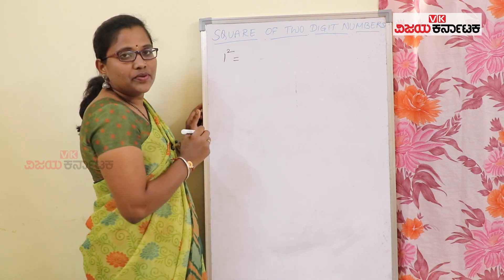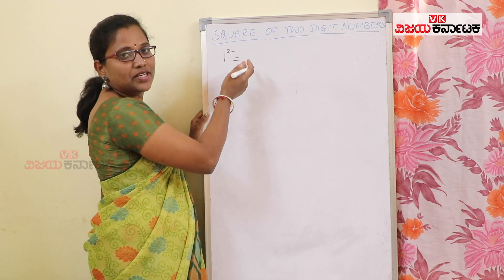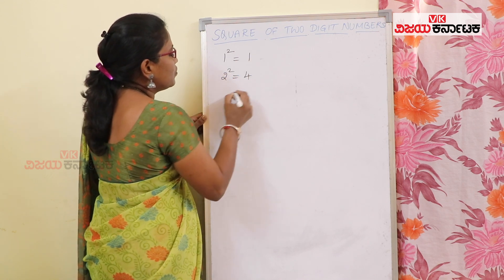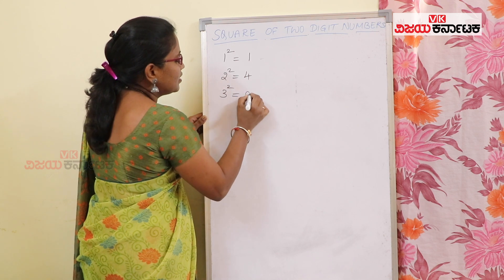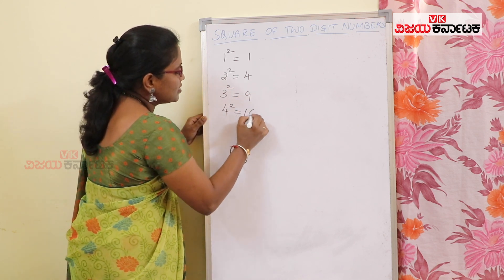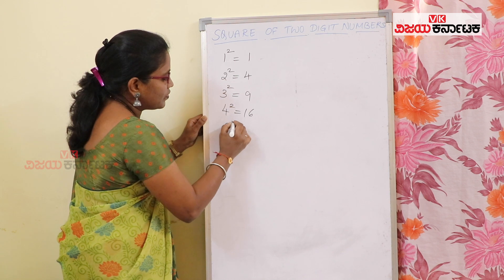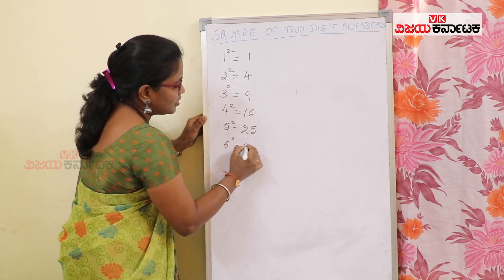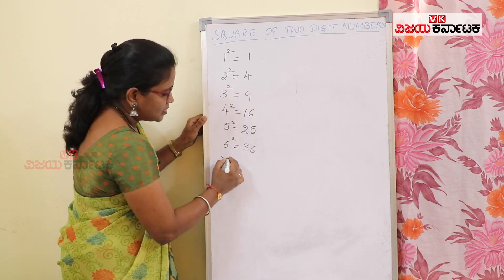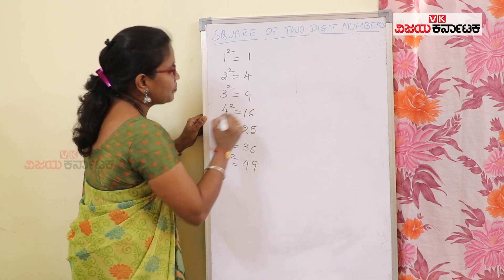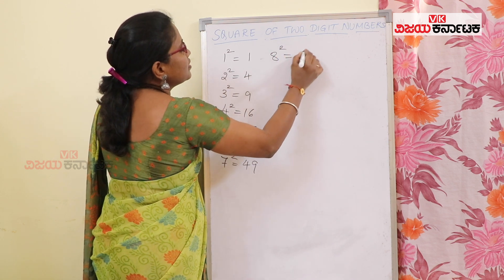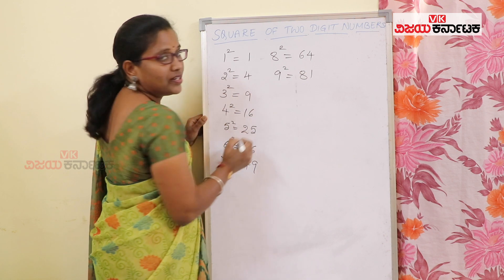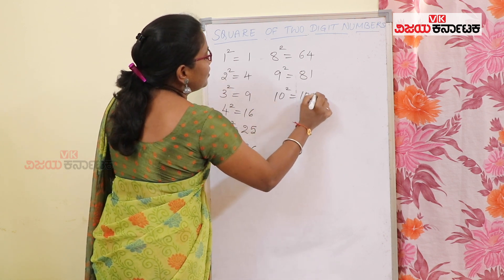One squared is one. Two squared is four. Three squared is nine. Four squared is sixteen. Five squared is twenty-five. Six squared is thirty-six. Seven squared is forty-nine. Eight squared is sixty-four. Nine squared is eighty-one. Ten squared is one hundred.